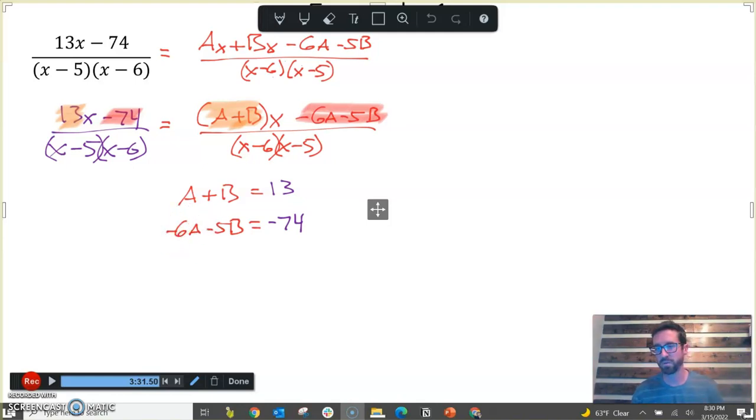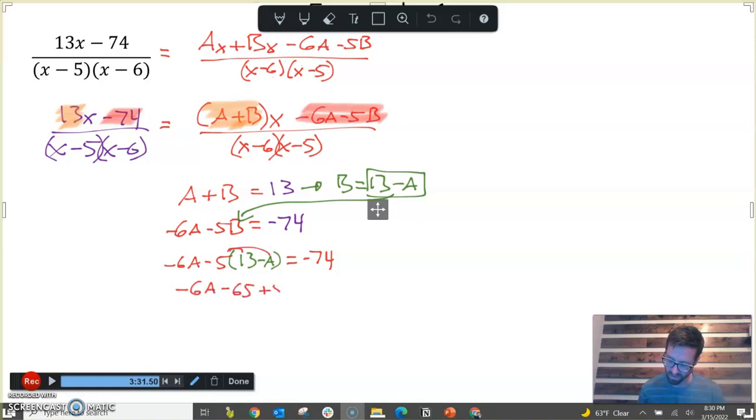And now look what we got here. You're having flashbacks to algebra 1. It's a good old-fashioned system of equations. So you could solve using any method of your choosing. I'm going to solve with substitution. So I'm going to take this and rewrite it as B equals 13 minus A by subtracting A on both sides. Then I'm going to take 13 minus A and substitute in for B in my second equation. So negative 6A minus 5B equals negative 74. Then we distribute, negative 6A minus 65 plus 5A equals negative 74.